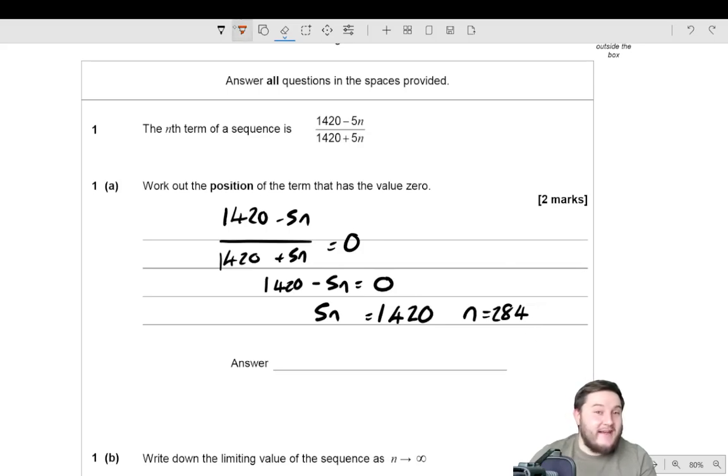You can just type in on the calculator, 1420 divided by 5, it'll tell you it's 284. I was trying to do it in my head, and that is not a clever decision in a calculator paper.